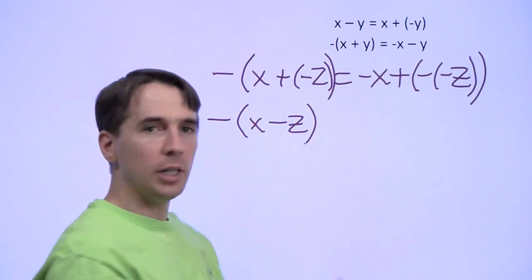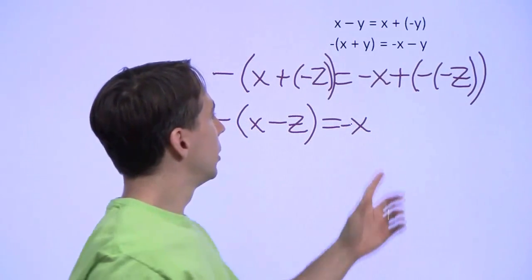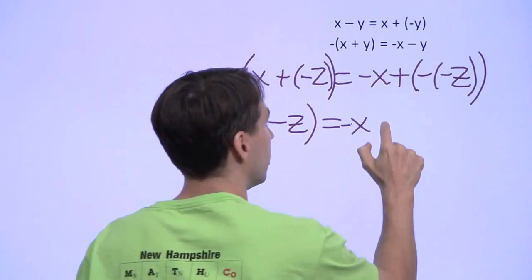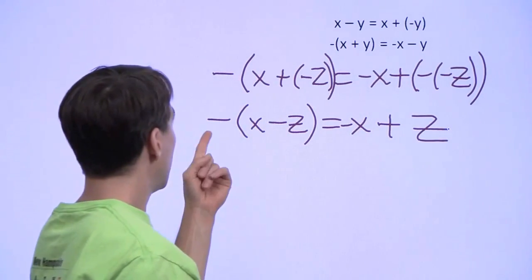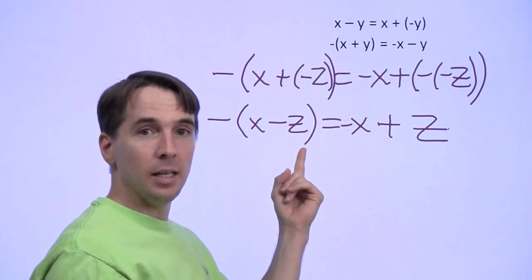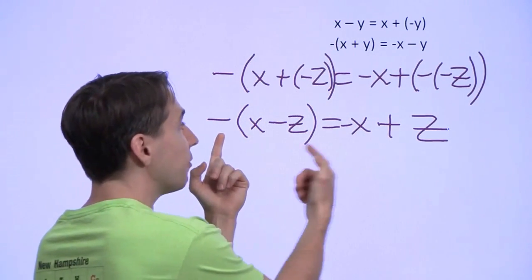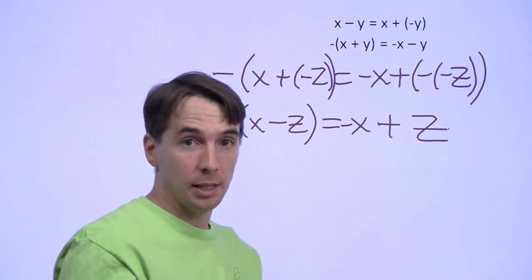And what's going on over here? Well, we still have the minus x, the negative x here, and the negation of the negation of z, well, that's just z. And look at that. We've taken the negation of x minus z, and that becomes the negation of x plus z. We've just flipped the signs here. We take the negation of x minus z, we get minus x plus z.